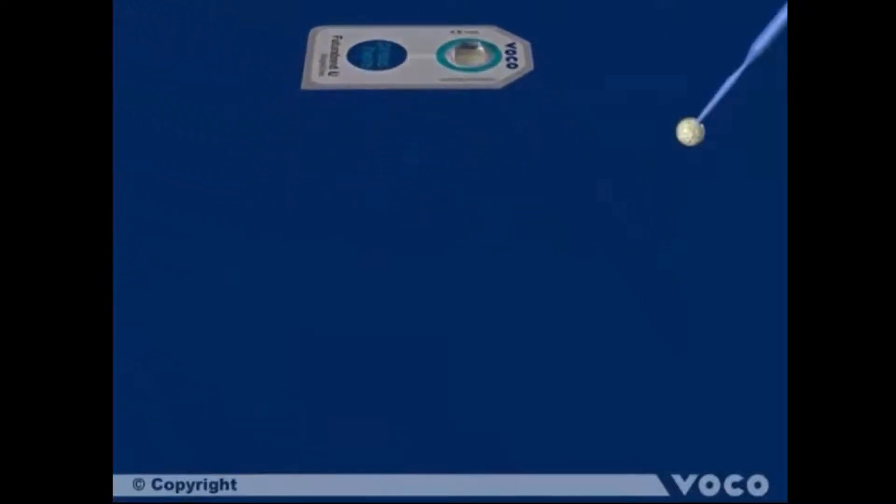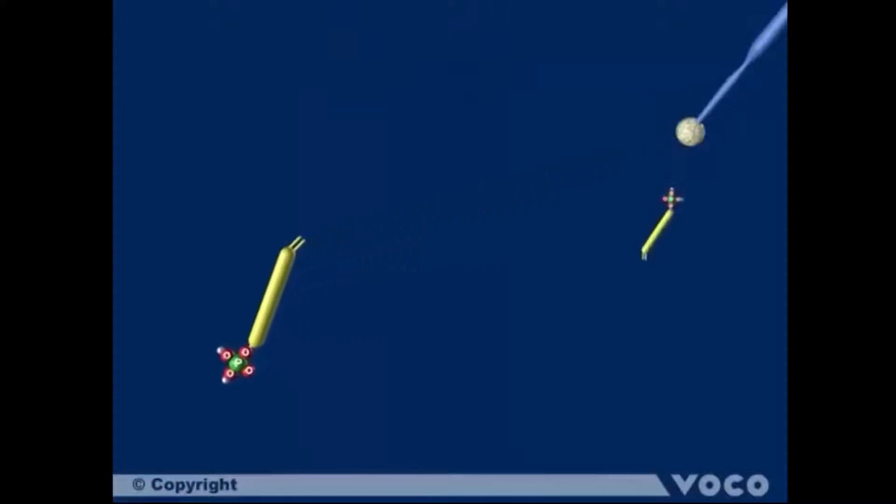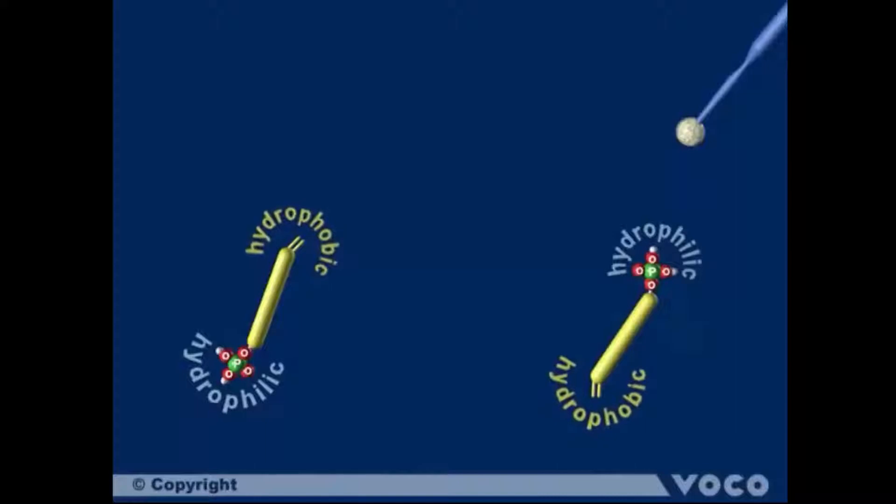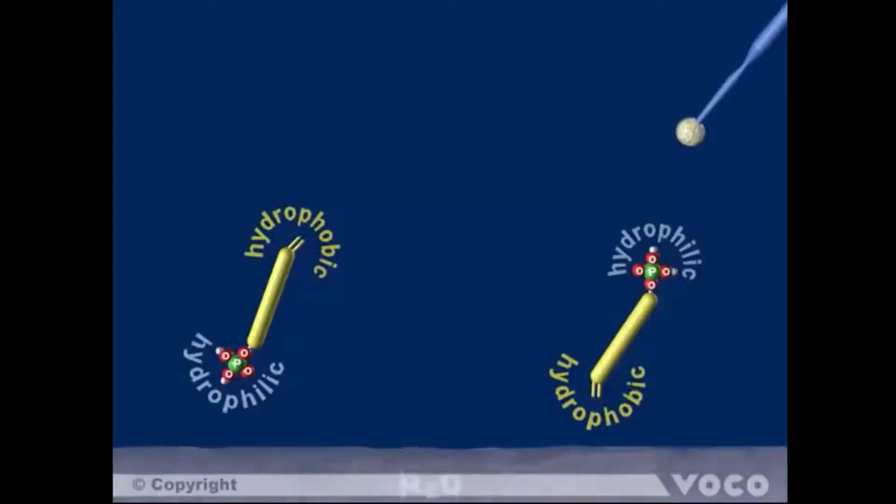A closer look inside the bonding liquid shows the different components which are absolutely necessary to create a long-lasting adhesion between tooth substance and composite material. Acidic monomers are included in the mixture which offer two different polarities in one molecule. On one hand a hydrophilic part, which means water loving, enables the connection to the tooth. On the other hand a hydrophobic part, which means water repellent, builds up the chemical connection to the composite.